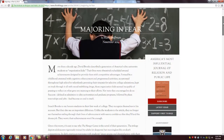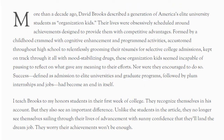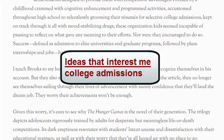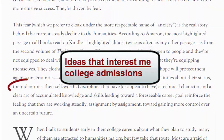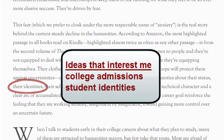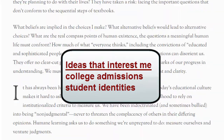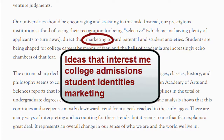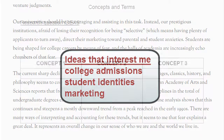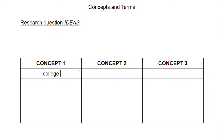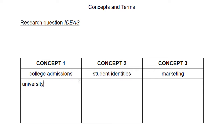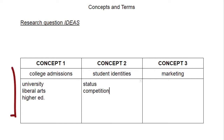You might begin with a text your professor has assigned, highlighting important ideas and looking for a topic that interests you. Keep a list of concepts and terms that pique your curiosity. You can use this list to generate search terms when you go to the course catalog, the databases, or the internet.